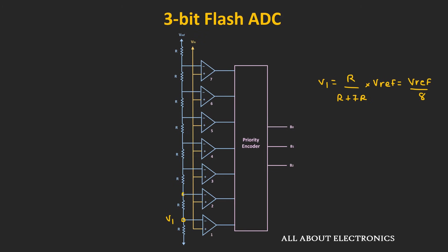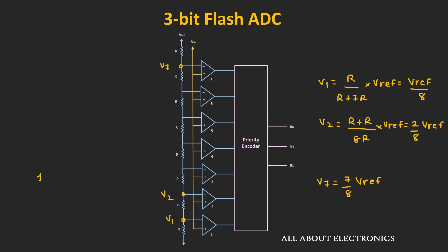Similarly, the reference voltage for the second comparator V2 will be equal to 2 times V_reference divided by 8, and likewise for the seventh comparator V7. As you can see, there is a difference of 1 LSB between each reference voltage, because the value of 1 LSB is equal to V_reference divided by 8.